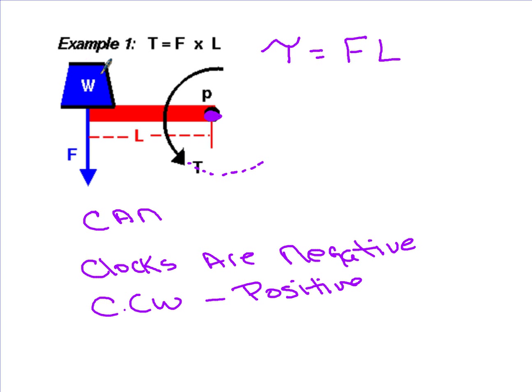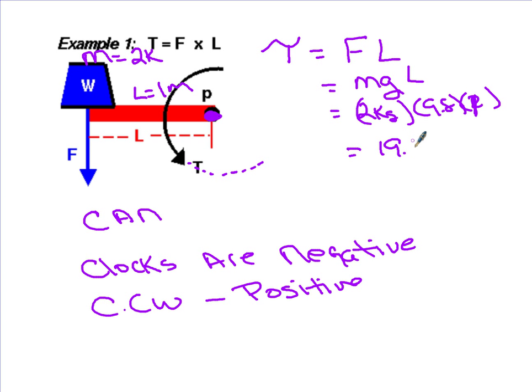For example, suppose this had a mass of 2 kilograms and this had a length, a lever arm, of 1 meter. The torque would be the force produced, and the force produced is the weight. That's mg times the lever arm. So this is going to be 2 kilograms times 9.8 times your lever arm of 1 meter. So 2 times 9.8 times 1 gives me a torque of 19.6, and the units are Newton meters.